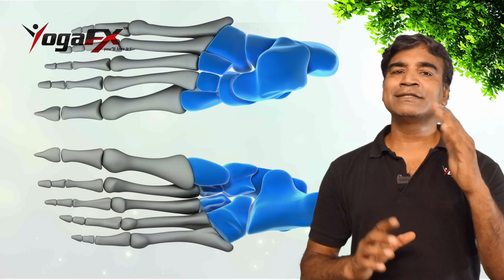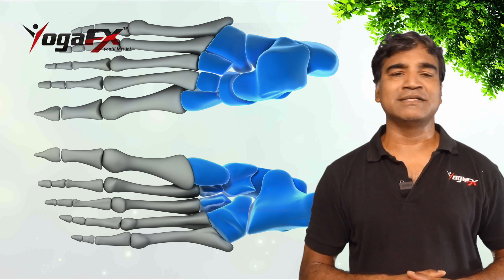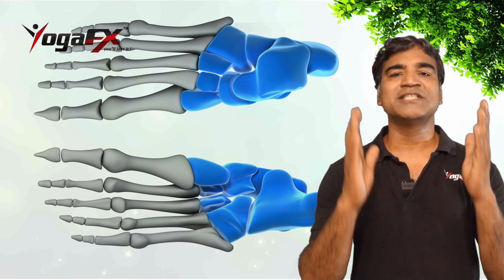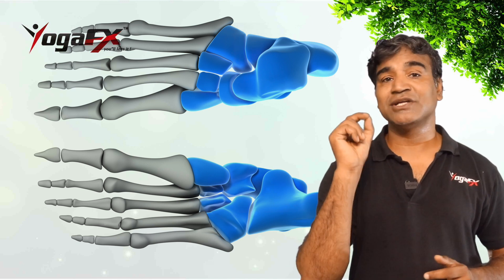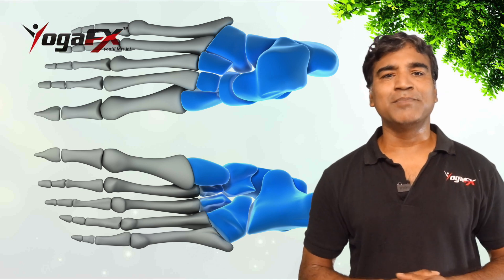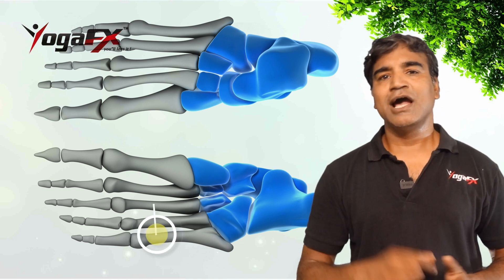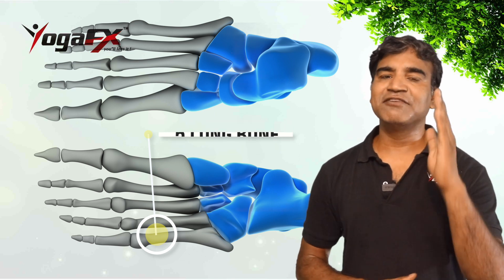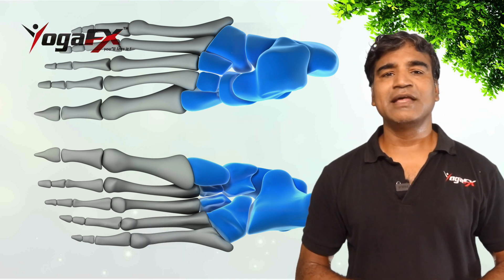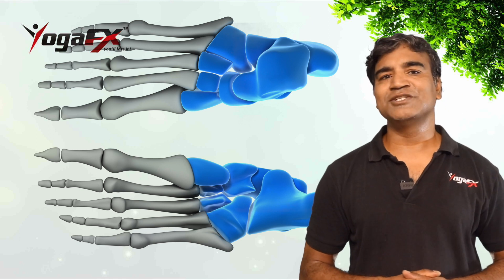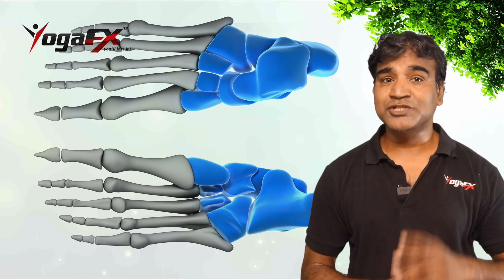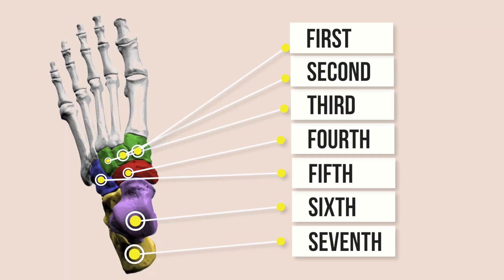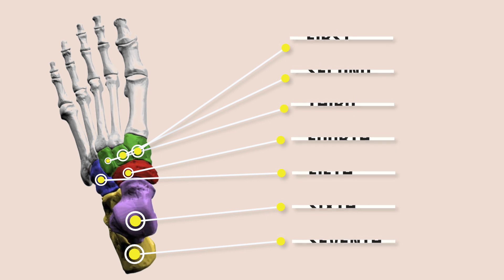The tarsal bones of the foot are important in movement. They articulate with the bones of the metatarsus — a group of five long bones located between the tarsal bones and the phalanges (toe bones). The tarsus meets the ankle joint above, which connects to the tibia and fibula bones of the leg. The tarsals are the seven bones that make up the ankle.